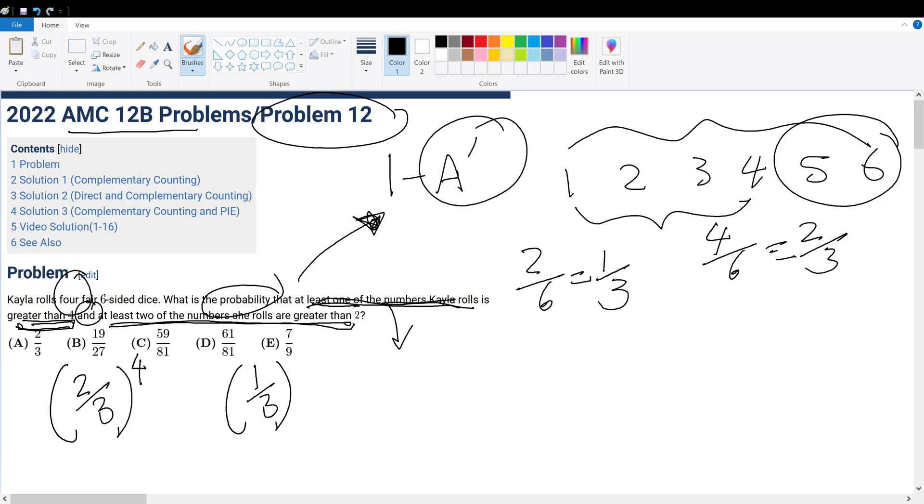Now, this die could be any die, so we have to do 4 choose 1 in front of it.